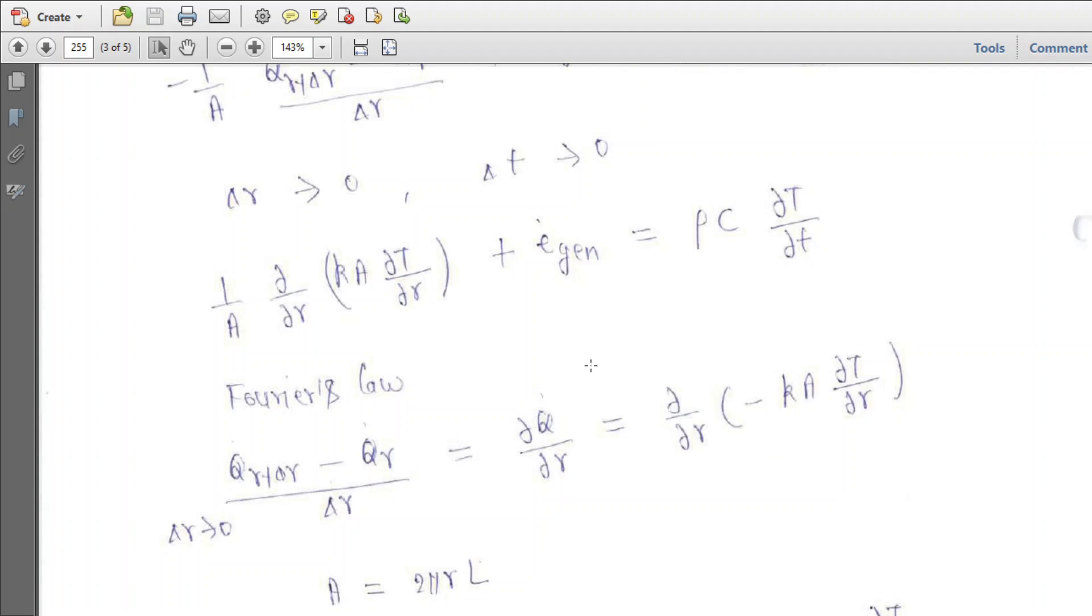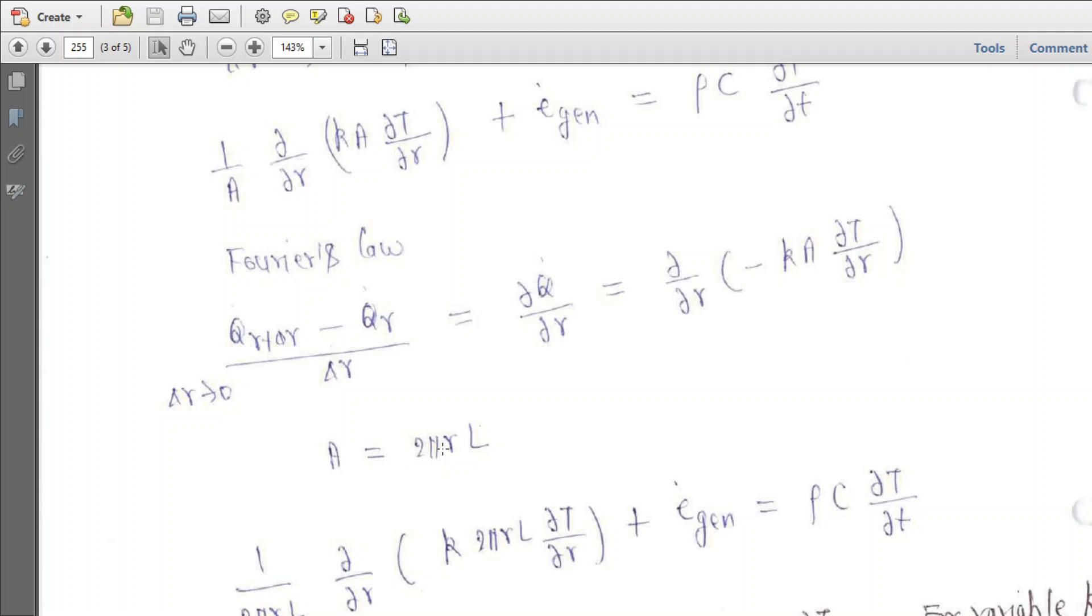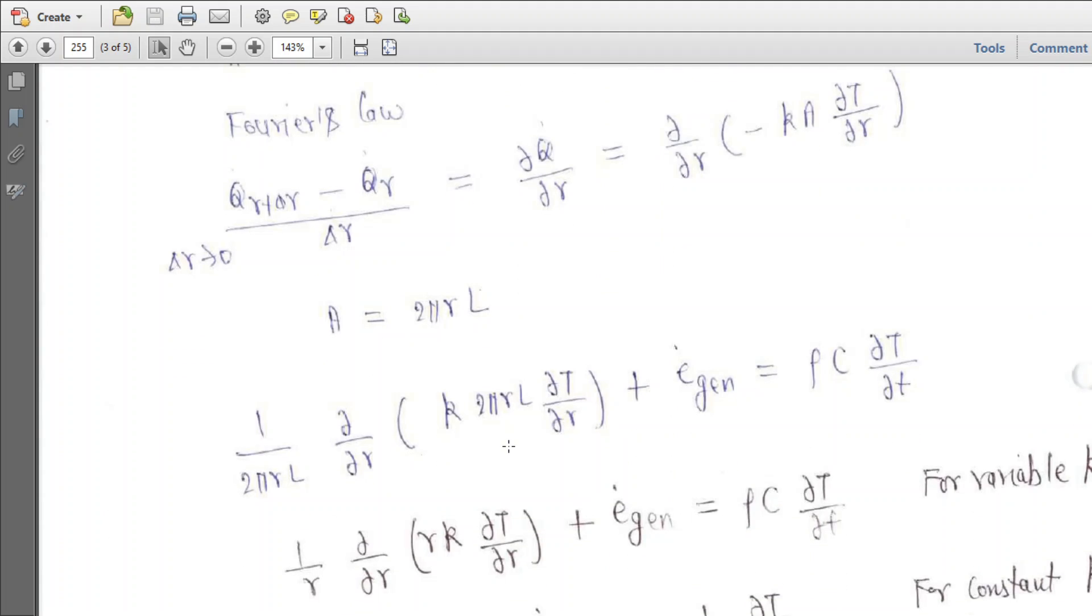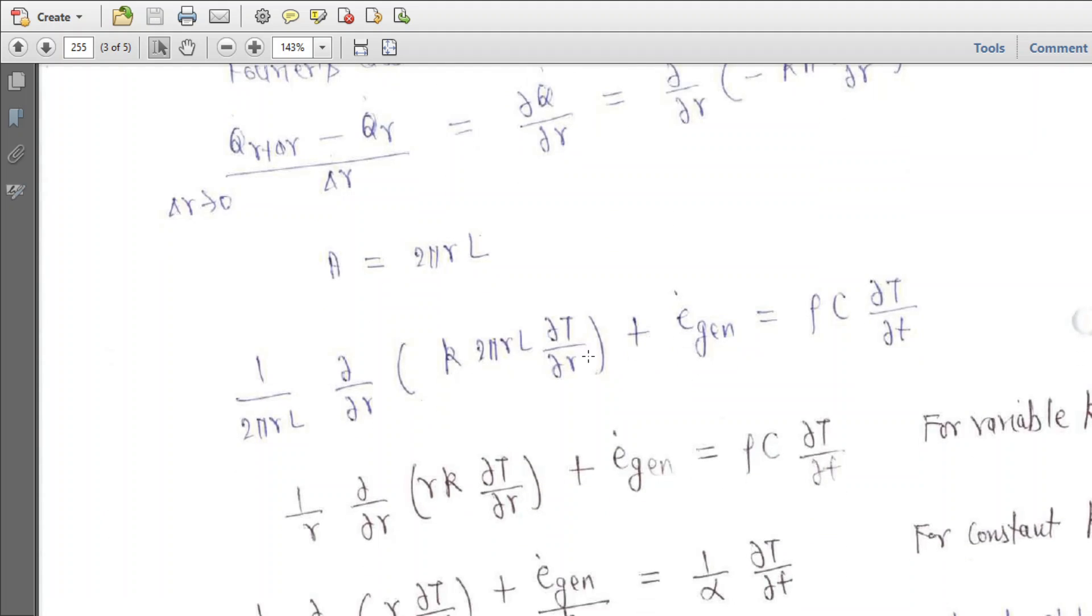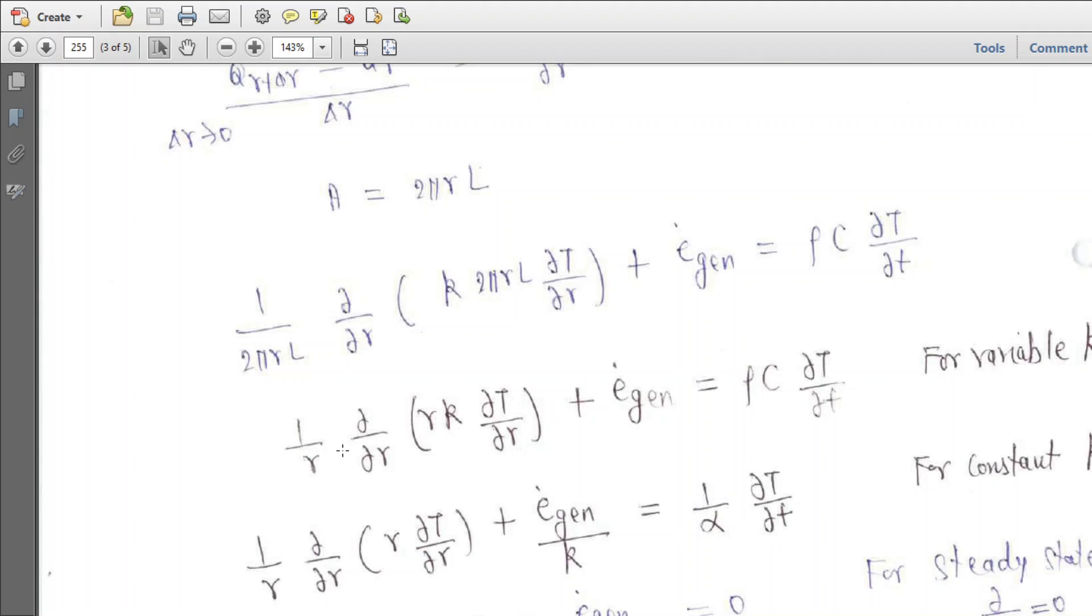Now applying Fourier's law: Q̇_R equals minus K·A·∂T/∂R. Putting area equal to 2πRL and substituting, we get (1/R)(∂/∂R)(K·R·∂T/∂R) plus Ė_gen equals ρc_p·∂T/∂t for variable conductivity.